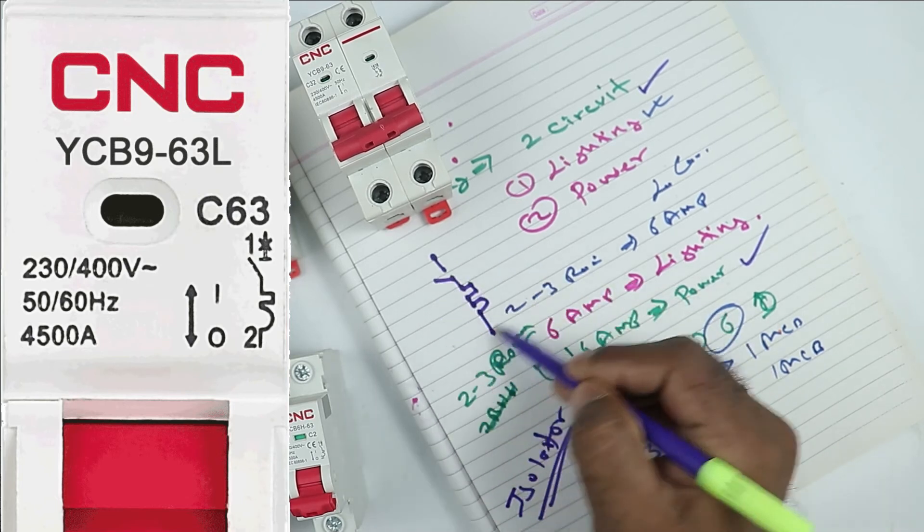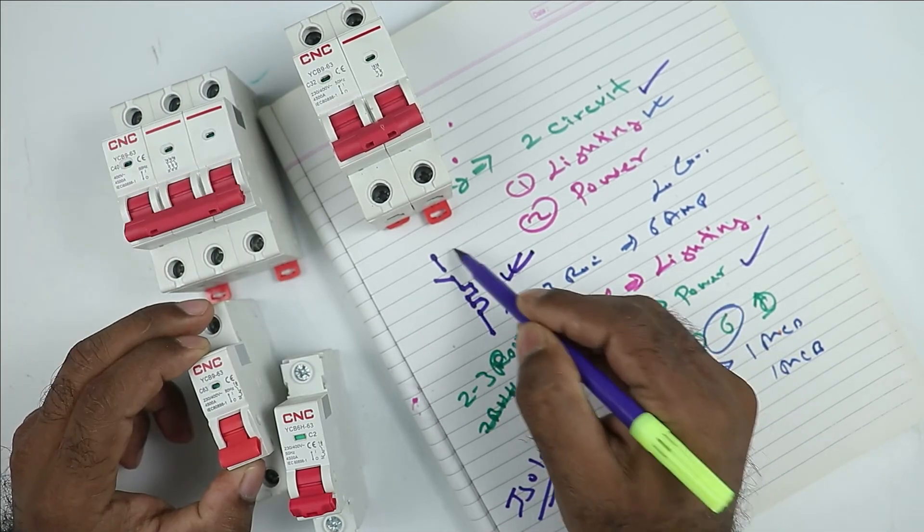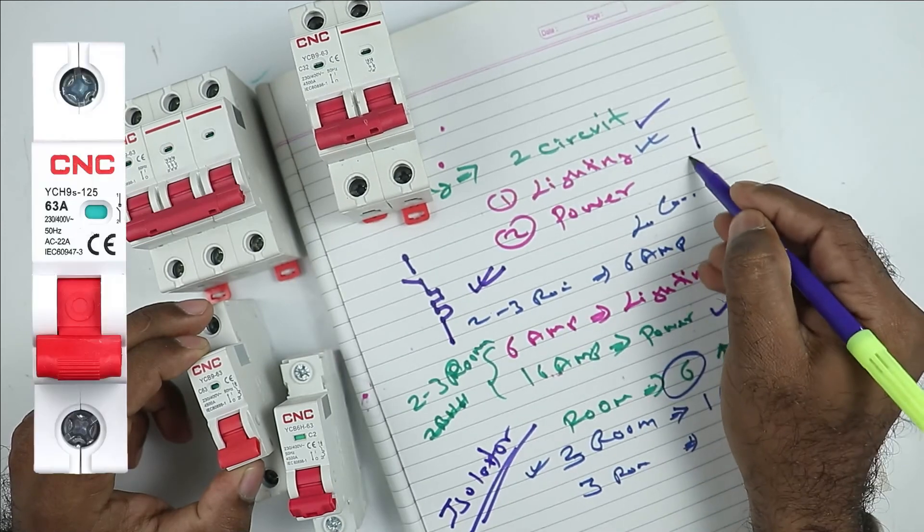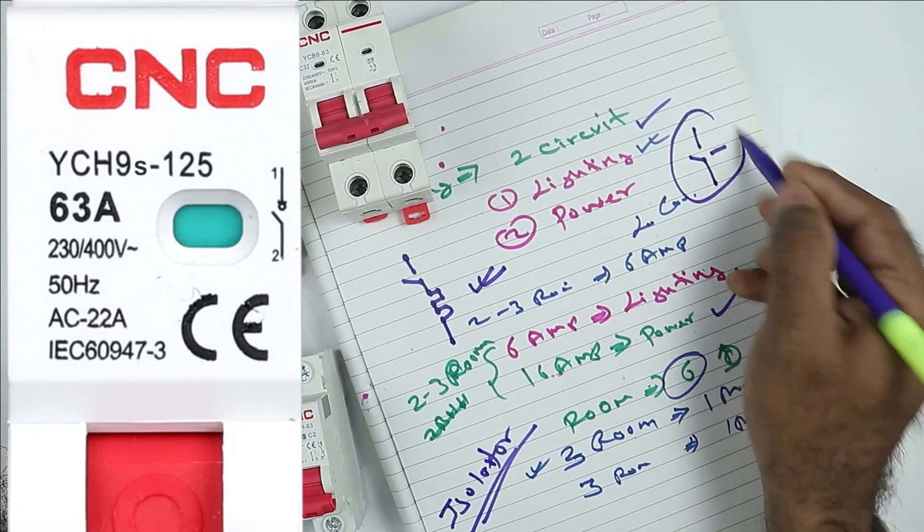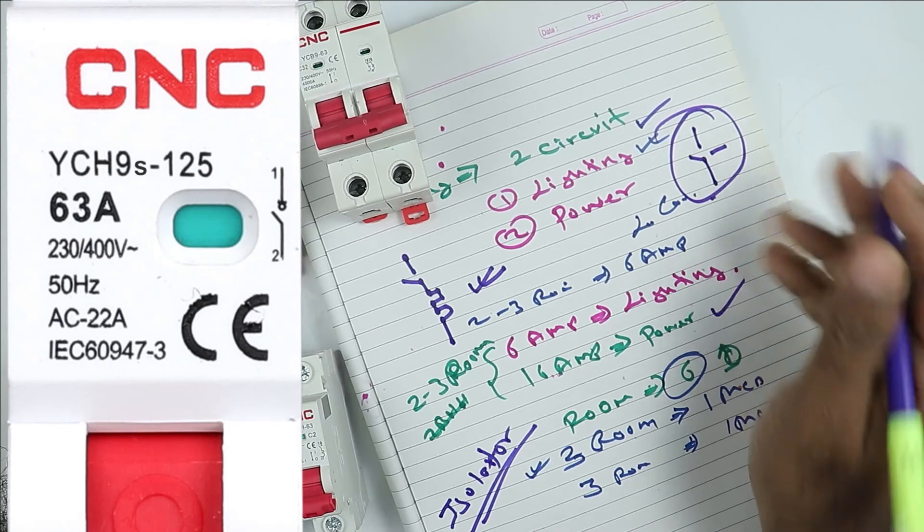Above the MCB, if this type of symbol is there, then you can buy this. If this symbol is not there and only this type of symbol is present there, then don't buy this one. This is a symbol of isolator.